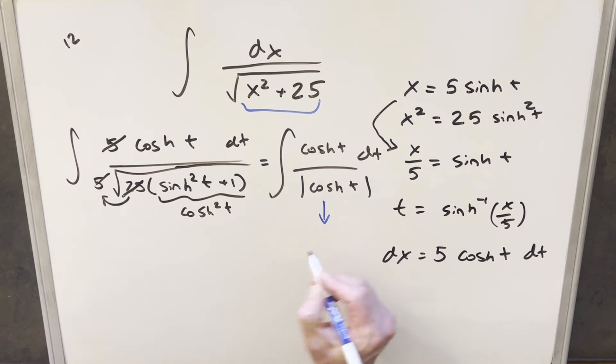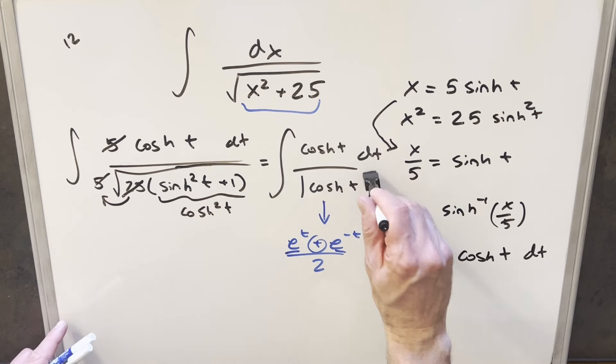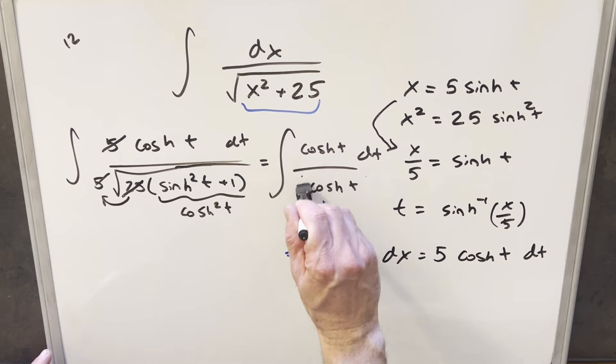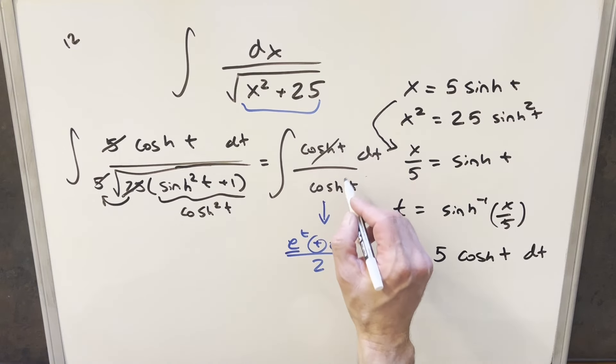But now for cosh t, we can just look at this definition really quick. Cosh t is going to be the same thing as e to the t plus e to the minus t over 2. So we're adding here, and exponentials have to be positive. So the whole numerator is going to be positive, the whole thing is going to be positive, and we can just drop our absolute value right here. But then we can cancel cosh t and cosh t, and so we're just integrating 1 dt.